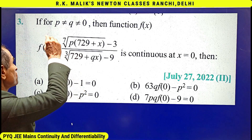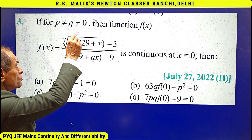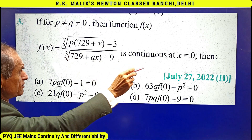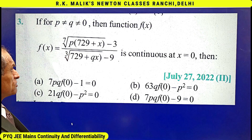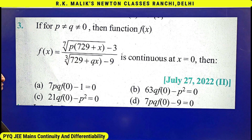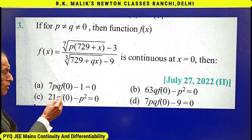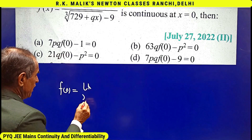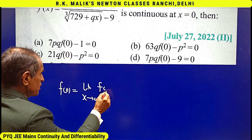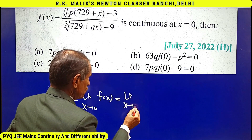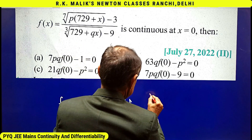In this question, it is given that for p not equal to q not equal to 0, the function f(x) is continuous at x equal to 0, and we have to find the correct choice. From the choices, it is clear that we have to find the value of f(0) in terms of p and q. For the function to be continuous, the value of f(0) should be equal to the limit as x tends to 0 of f(x).